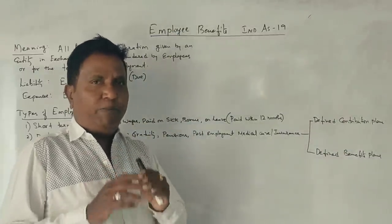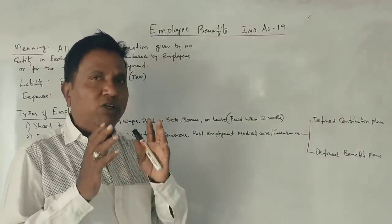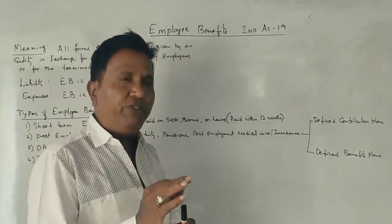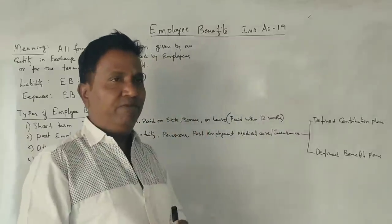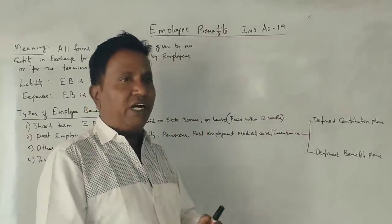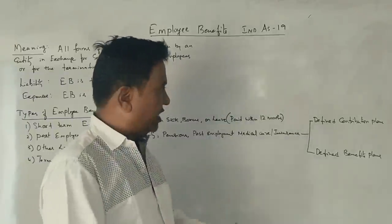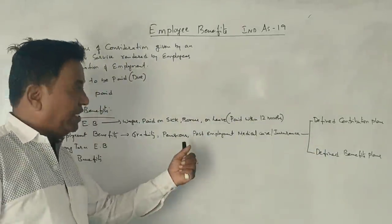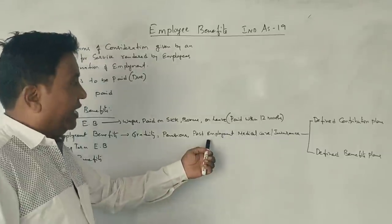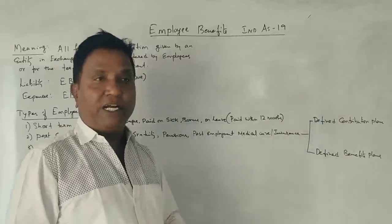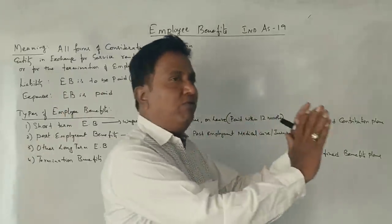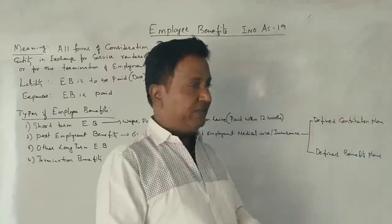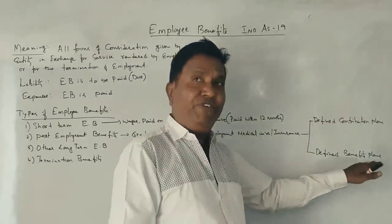Every year, the company and the employee make contributions. The defined contribution plan includes provident fund, gratuity fund, pension fund, and employment medical benefits. Under the defined benefits plan, the employee gets a defined benefit.